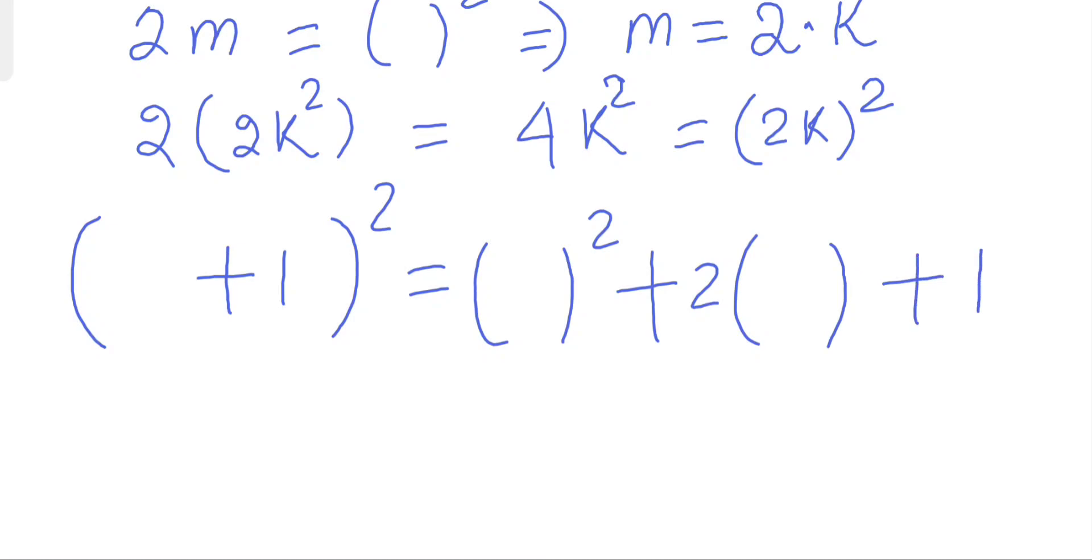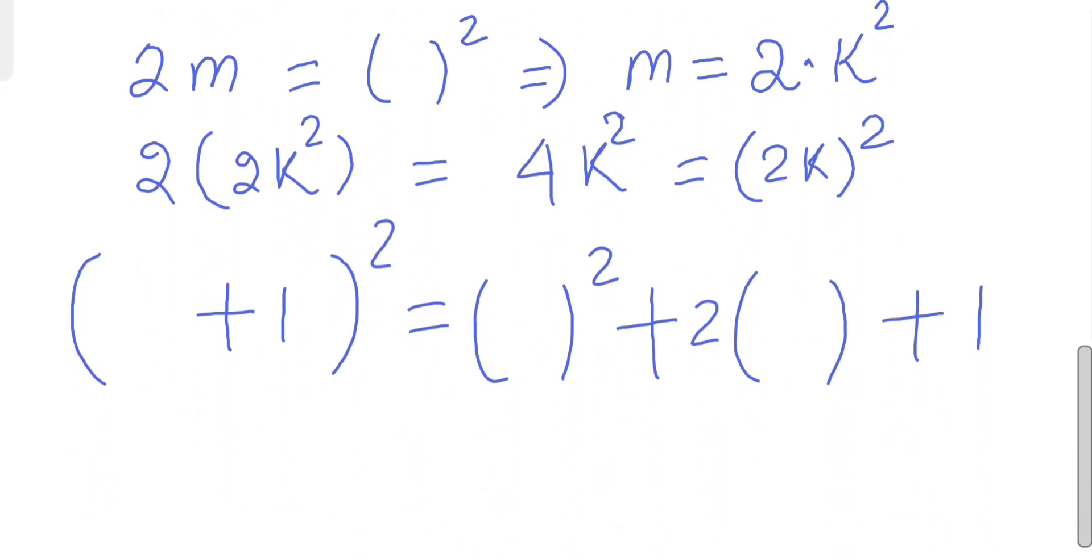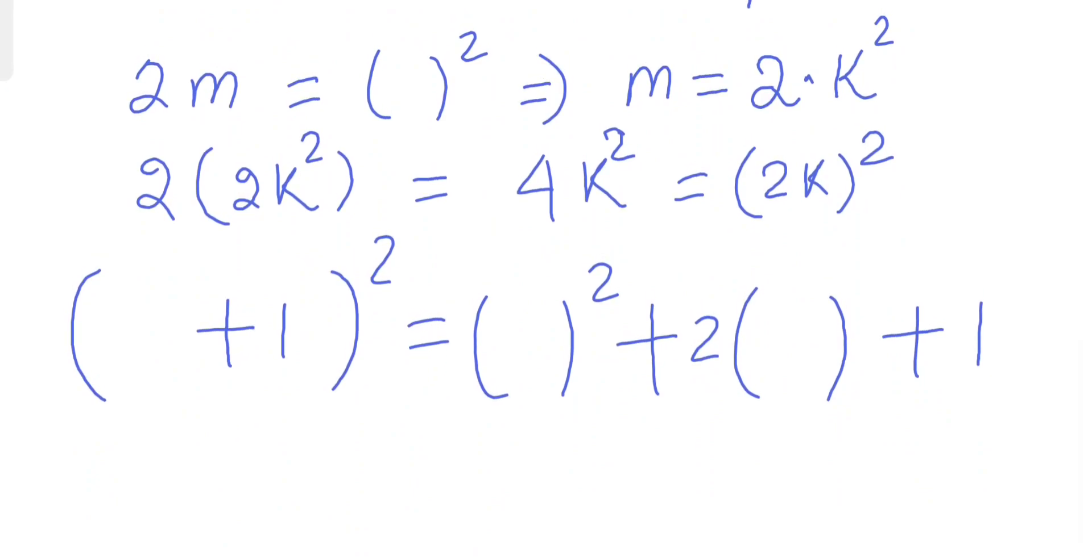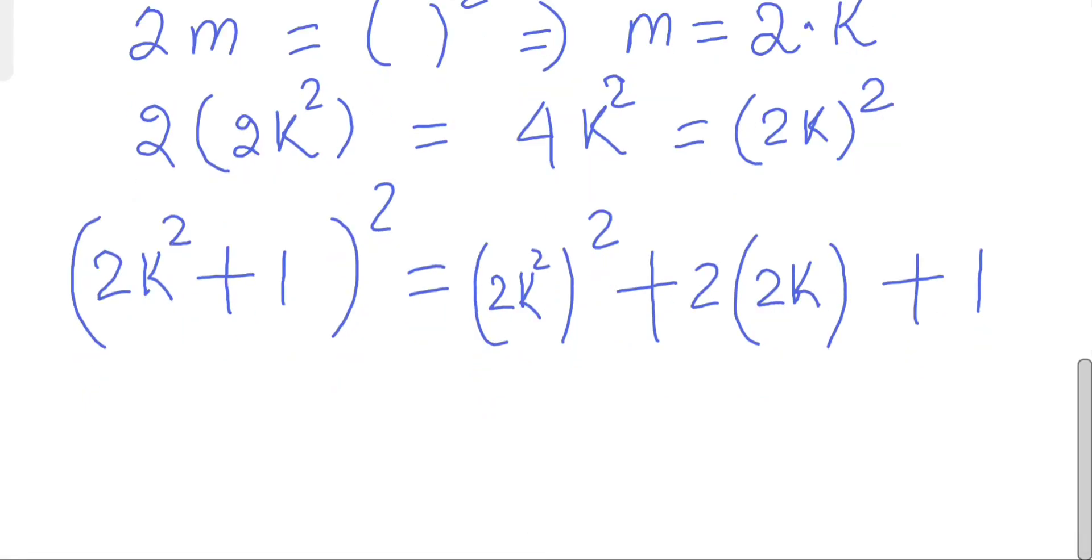So now... okay, so before there was m, but now we know that if we make 2k² substitution here, for any integer, for any integer 2k² and 2k, this whole equation becomes a perfect formula. (2k²+1)² equals (2k²)²...